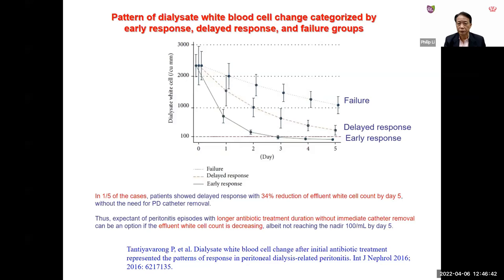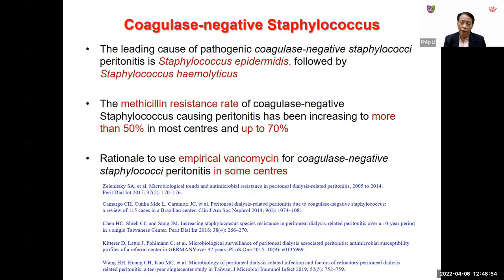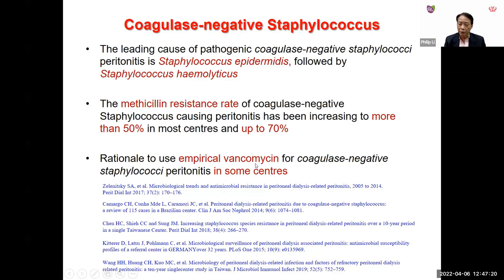For coagulase-negative Staphylococcus (CNS) peritonitis, treatment duration of 14 days is recommended. The predominant causative CNS species are Staphylococcus epidermidis and Staphylococcus haemolyticus. Methicillin resistance rates in CNS have increased, now ranging from 50% to up to 70%, which is the rationale for some centers considering empirical vancomycin coverage for CNS in their population.